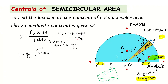The integration of sinθ is −cosθ. So with the constant (2r/3π) outside, we evaluate [−cosθ] from 0 to π. The expression becomes y-bar = (2r/3π) × [−cosθ] from 0 to π.